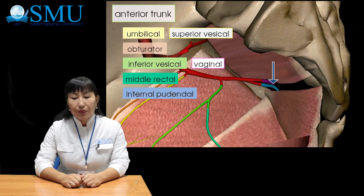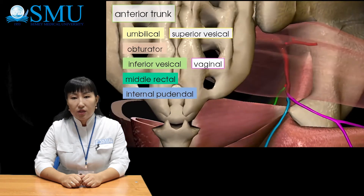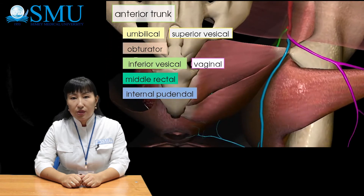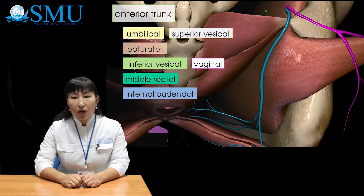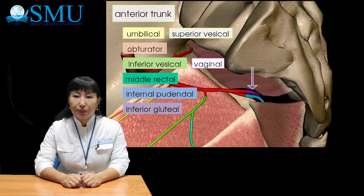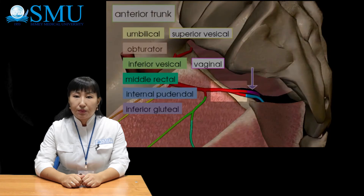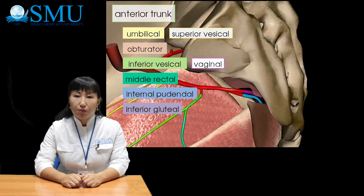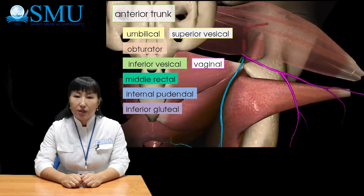The internal pudendal artery leaves the pelvic cavity through the piriform opening and through the small sciatic opening enters the ischioanal fossa, where it gives off the inferior rectal artery and perineal artery, as well as arteries to the urethra, vagina, and clitoris, anastomosing with the uterine and external genital arteries. The inferior gluteal artery accesses the pelvis through the piriformis opening to the gluteal muscles, supplying blood to the muscles and skin of the gluteal region and the hip joint.